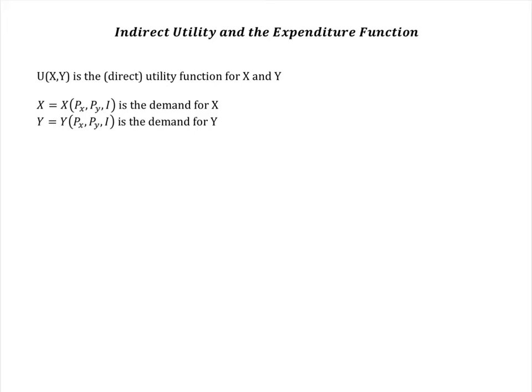Substitute these back into the utility function and we get utility as a function of prices and income - that is, the indirect utility function. It measures the satisfaction a utility-maximizing person would obtain with this income facing these prices.